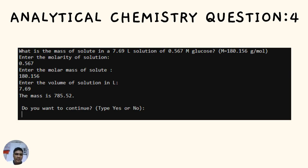The last question in Analytical Chemistry: What is the mass of solute in a 7.69 liter solution of 0.567 molar concentration of glucose? The molar mass of glucose is 180.156. Enter the molarity of solution as 0.567, the molar mass as 180.156, and the volume of solution as 7.69 liters. The mass of solute is 785.52.